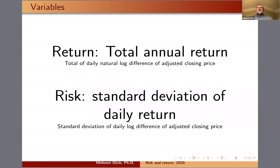The return is the total annual return — natural log differences of adjusted closing prices. The risk is defined as the standard deviation of daily return, and again the daily return is the adjusted closing prices log differences.